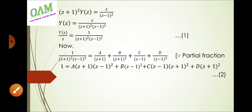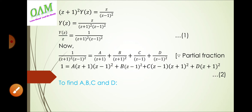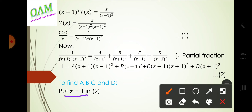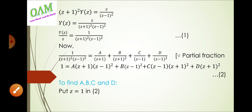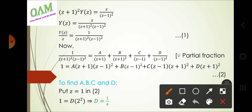Comparing coefficients, we set up equations to find A, B, C, D. Substituting Z = 1, all terms except D vanish: 1 = D·(1+1)² = D·4, so D = 1/4.